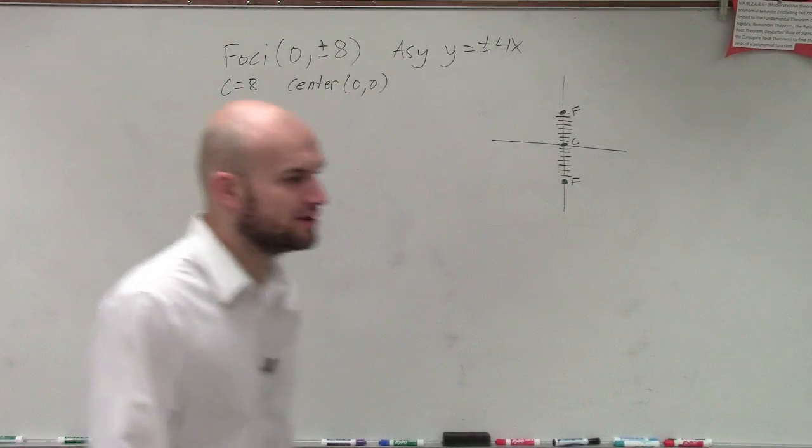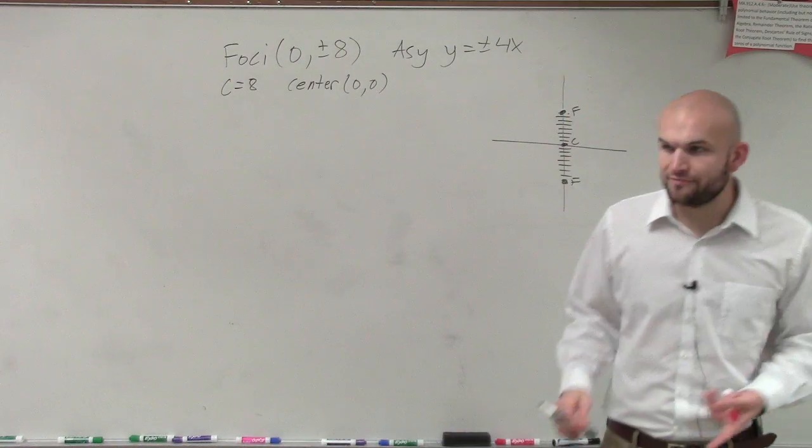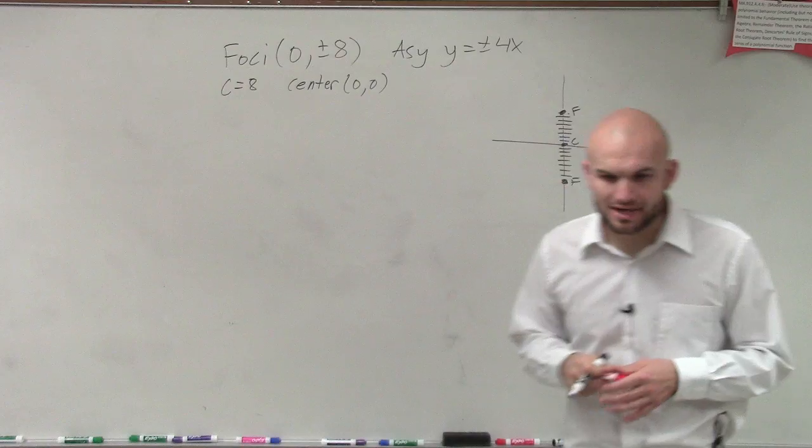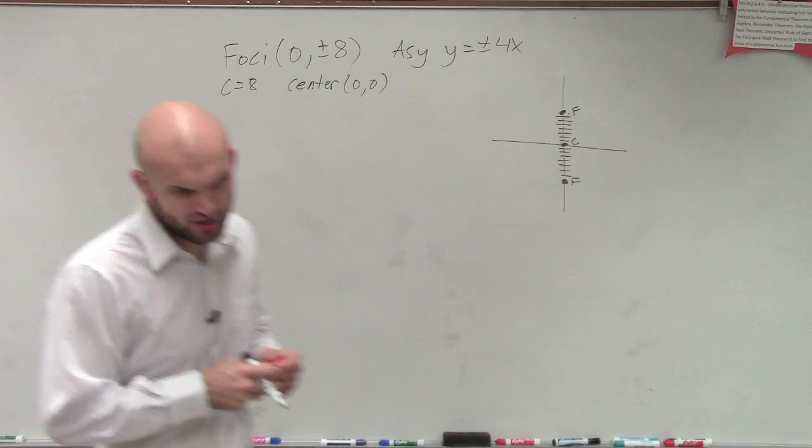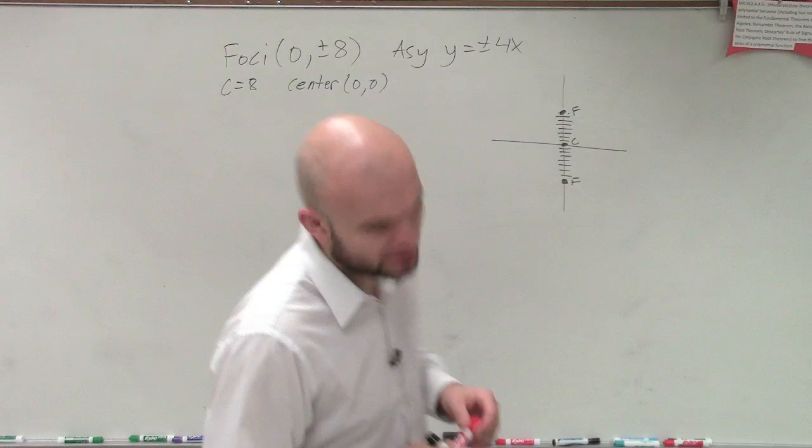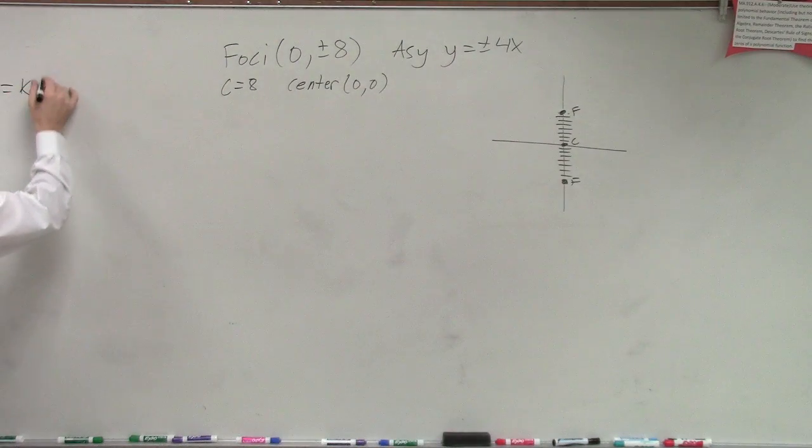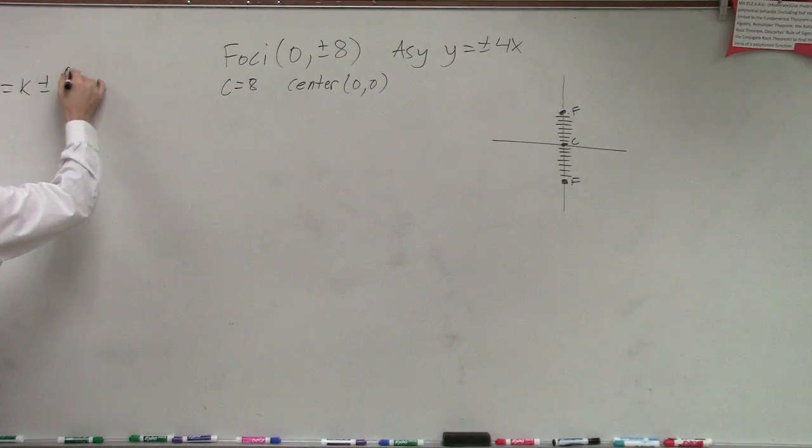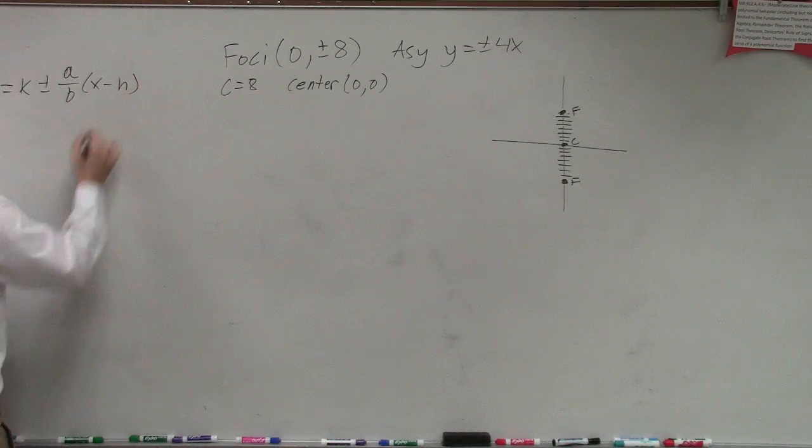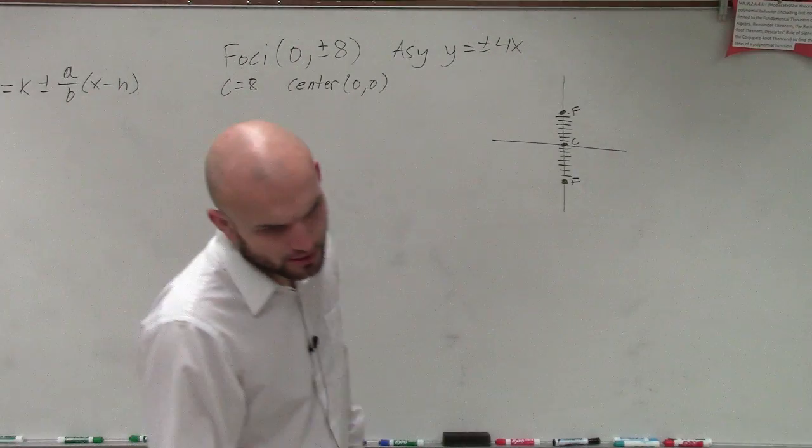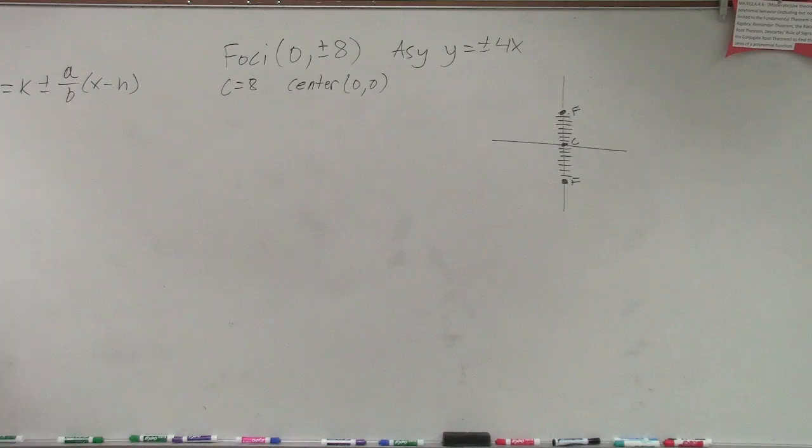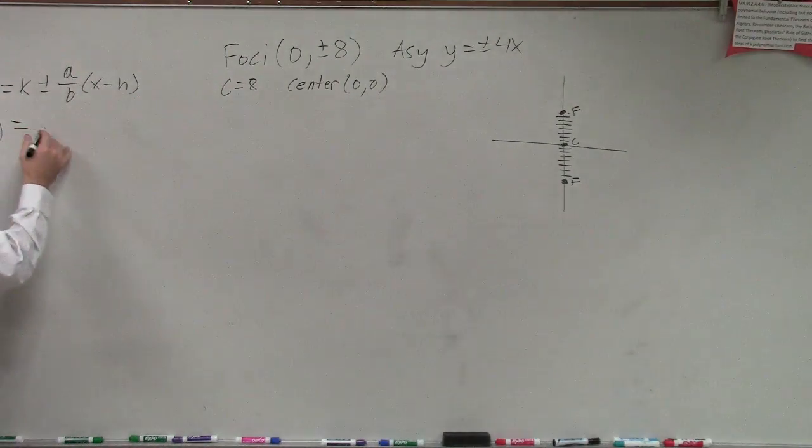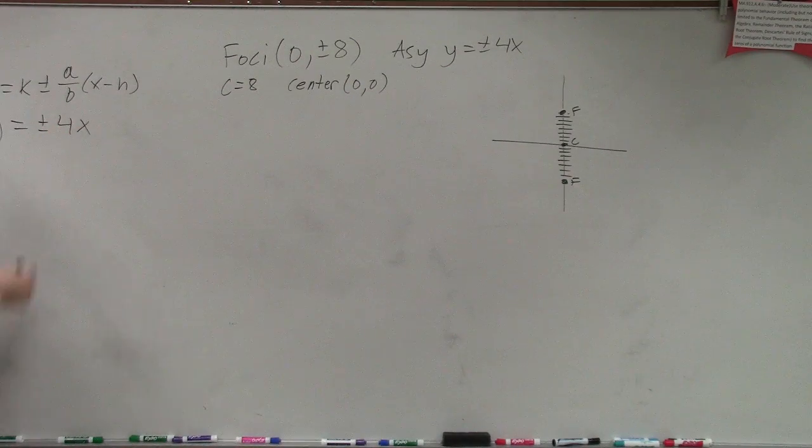But to be able to figure out the rest of this problem, to be able to write the equation, I need to figure out what a and b are, correct? So we go back and look at our asymptote, which in this case, since it is vertical. The vertical, we have y equals k plus or minus a over b times x minus h, right? And which one was this problem? 25. So when we have this, well, the only thing they tell us is y equals plus or minus 4x. So what is 4 going to represent? a over b.